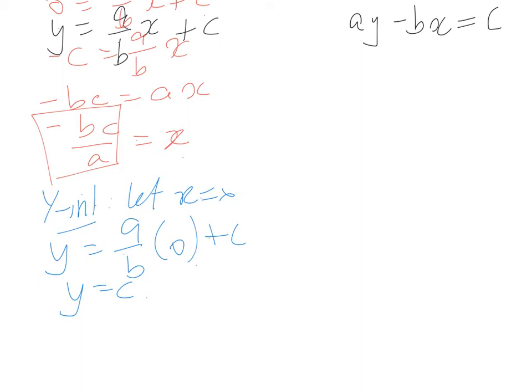So we've got our x-intercept is this. So it's negative bc over a comma 0. And our y-intercept is going to be 0 comma c. I'm going to throw an x there. So same goes for this one here.